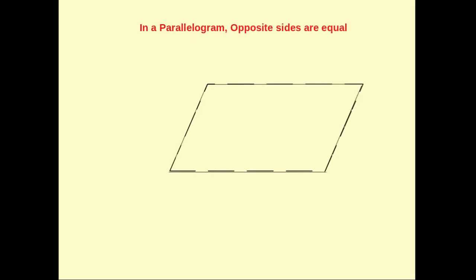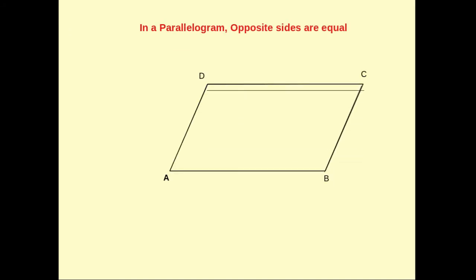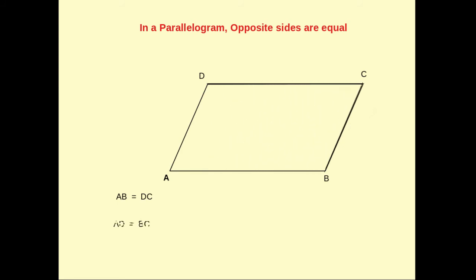In a parallelogram, the opposite sides are also equal. Here AB is equal to DC and AD is equal to BC, because they are corresponding parts of congruent triangles.